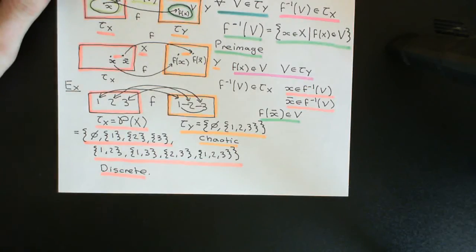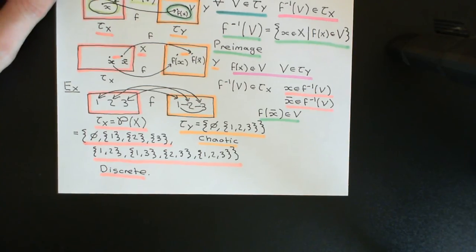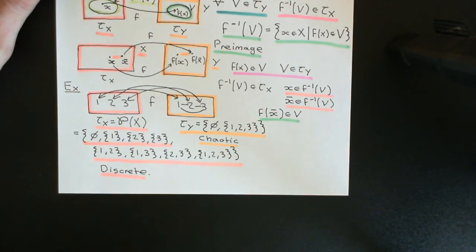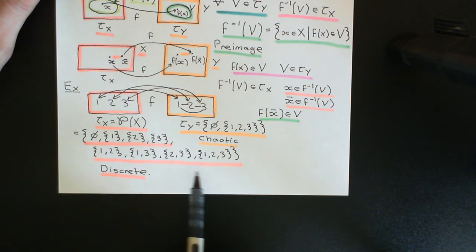Welcome back to this next video in which we are discussing continuous functions. We've got one final theorem that I want to prove about continuous functions in this video, which is that if you compose two continuous functions together, you end up with another continuous function. But just before we do that, let me just make a remark on this example again.